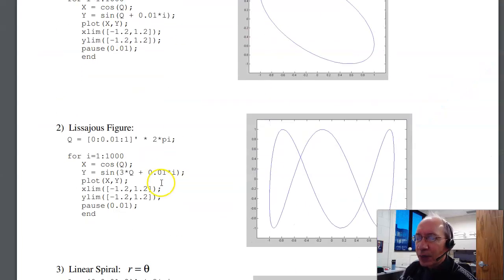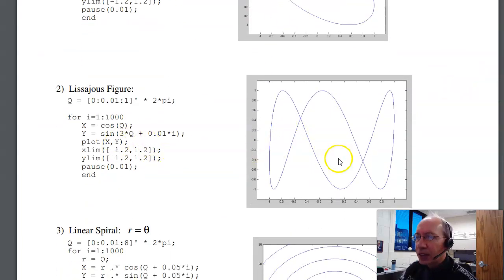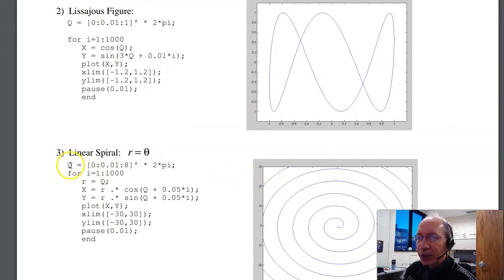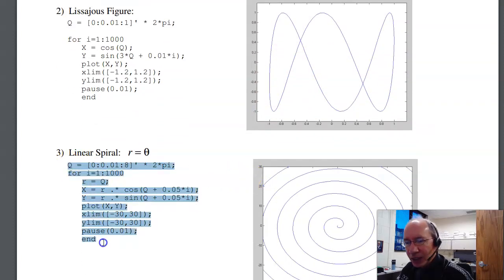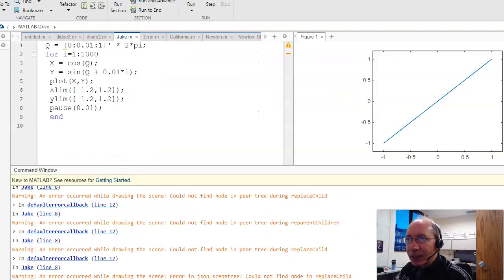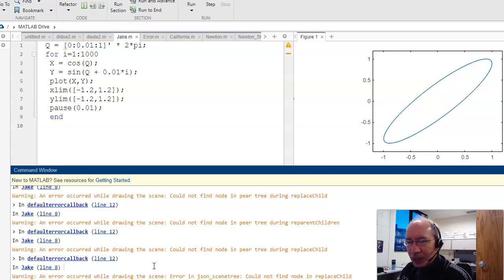The second problem is the Lissajous figure. This is the crown that kind of spins around. The third one is a log spiral. Kind of fun to look at. We'll see if we can get this to work. Sorta working now. If we go down to the command window, hit control C a couple times.